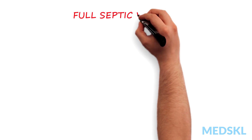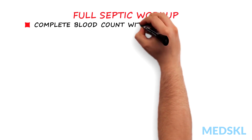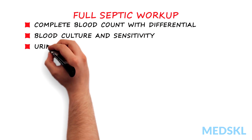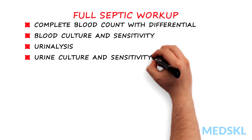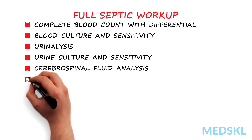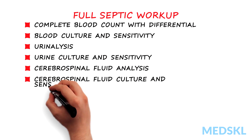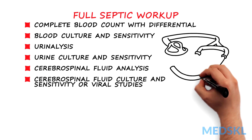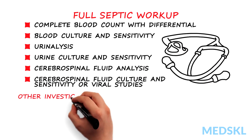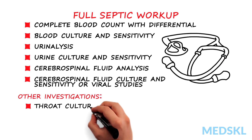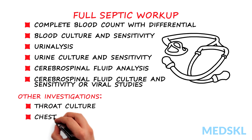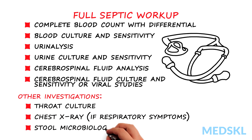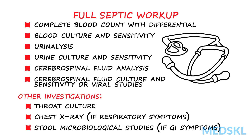A full septic workup includes a complete blood count with differential, blood culture and sensitivity, urinalysis, urine culture and sensitivity, cerebrospinal fluid analysis, and cerebrospinal fluid culture and sensitivity or viral studies. Other investigations may be required depending on the clinical presentation, such as a throat culture, chest x-ray if there are respiratory symptoms, or stool microbiological studies if gastrointestinal symptoms are present.